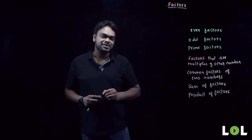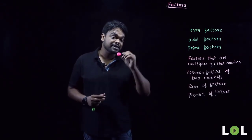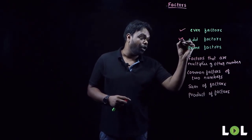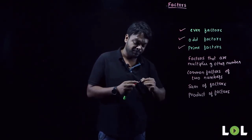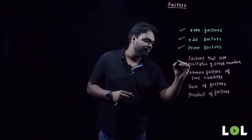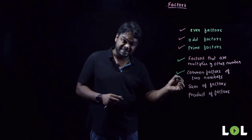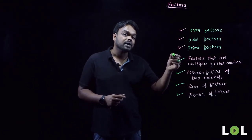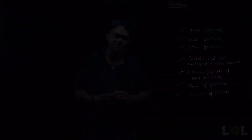What we've learned so far is how to calculate the total number of factors. Beyond that, using factorization we can also calculate even factors, odd factors, prime factors, factors that are multiples of other numbers (like 3, 6, or 12), common factors between two numbers, sum of factors, and product of factors — these are slightly more advanced topics.